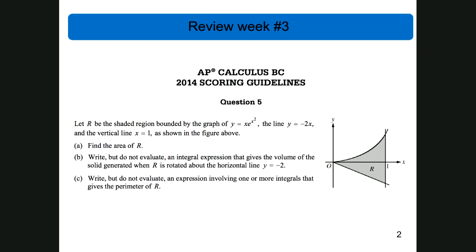It says let R be the shaded region bounded by the graph y equals x·e^(x²) and the line y equals negative 2x. When you're on an AP test, the best thing to do is write in everything that you know. Find the area of R. The area of R is top function minus bottom function, so the integral goes from 0 to 1: x·e^(x²) minus negative 2x, or plus 2x. Plug it into your calculator.